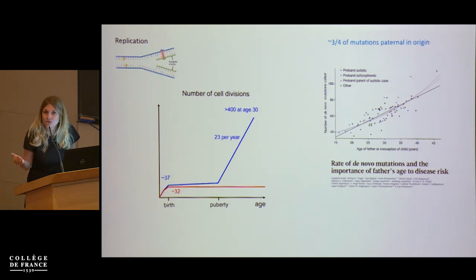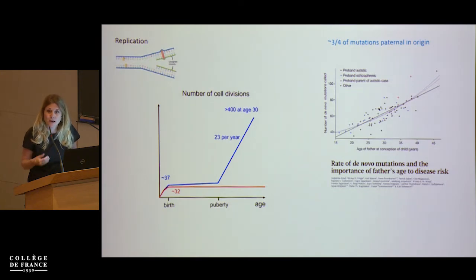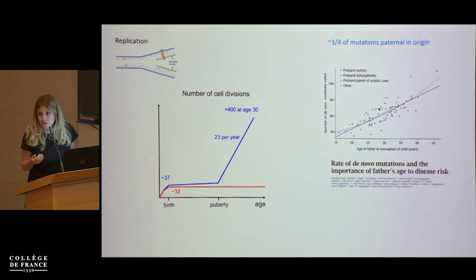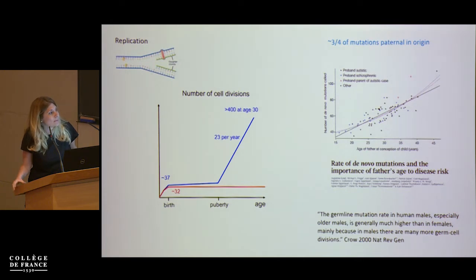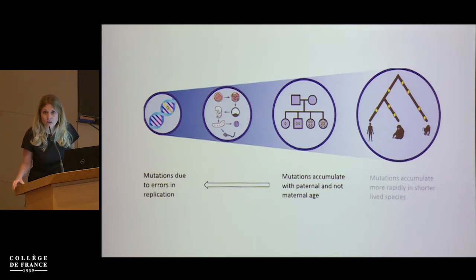We didn't need next-generation sequencing to tell us this picture was more or less what was going on. In fact, Weinberg, close to a century ago, already hypothesized the existence of a paternal age effect. And comparisons of sex chromosomes, autosomes, and rates of evolution had already informed us that about three quarters of mutations were paternal in origin.